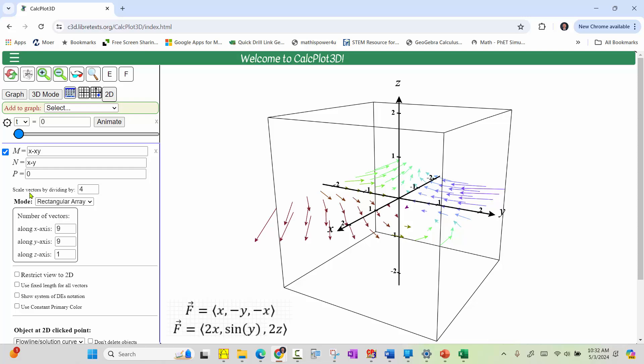Looking below, by default the vectors are being scaled by dividing by four. We can change this to make the vectors appear longer or shorter. There are three modes: rectangular, spherical, and cylindrical.